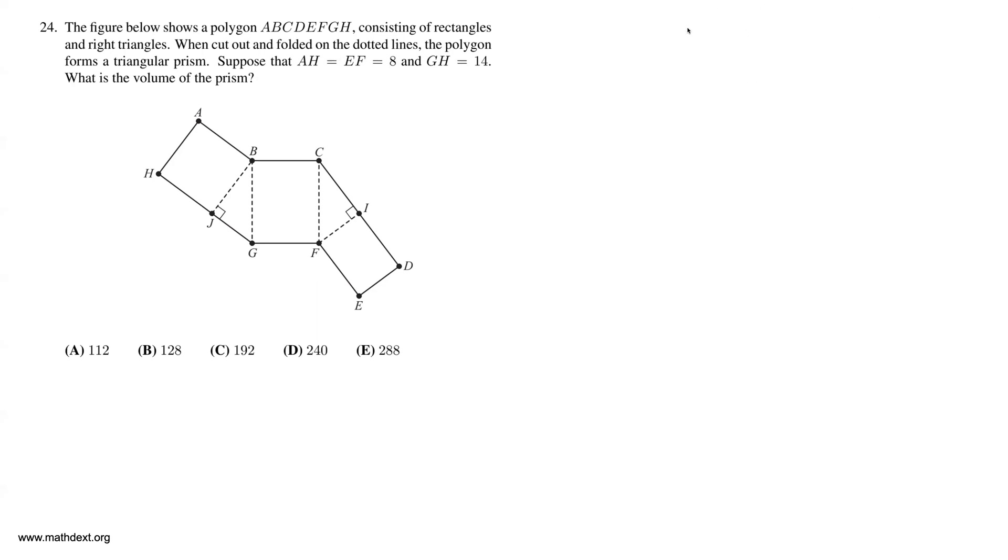Okay, so what we have is the net of a triangular prism. Those are the key two words. And what that means is that it is going to be a prism with triangular bases. Allow me to draw a picture of what it might look like. You have a triangle at the top of the prism, triangle at the bottom of the prism, and its sides are rectangles.